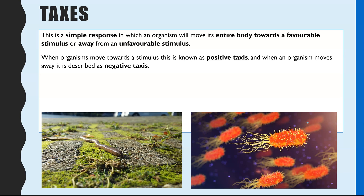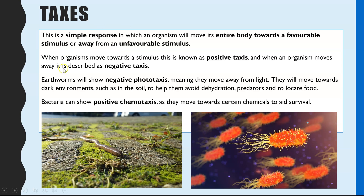When an organism moves towards a stimulus this is positive taxis, and when it moves away it's negative taxis. For example, earthworms show negative taxis towards light — they move their entire body away from light towards a darker area. This is because they need to avoid dehydration in the light, they're less likely to be spotted by predators in the dark, and their food source is more likely to be in a dark location.